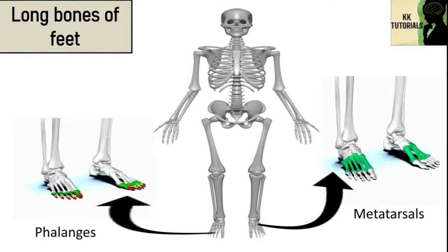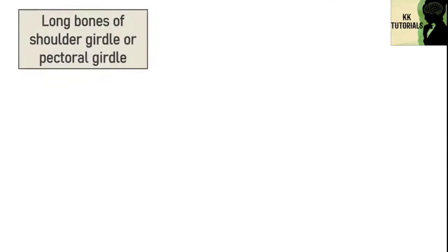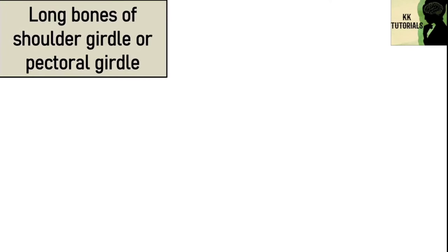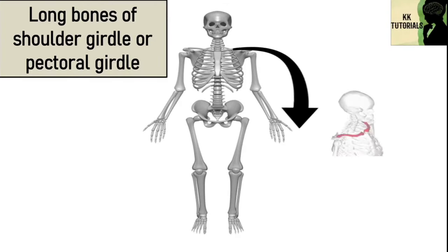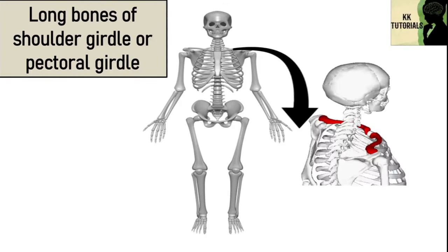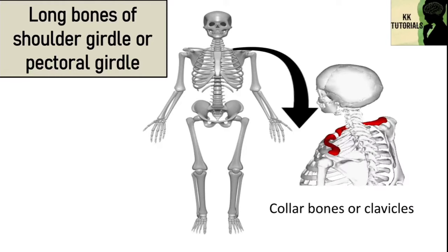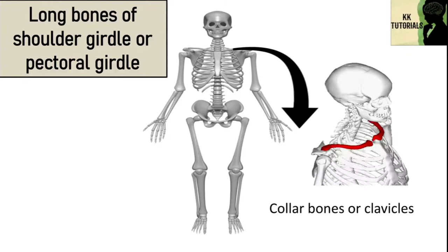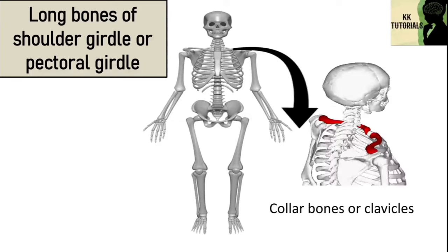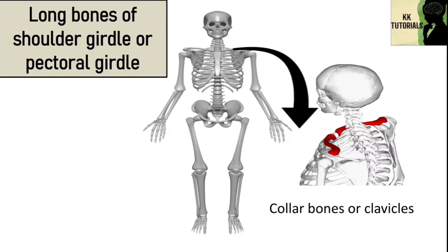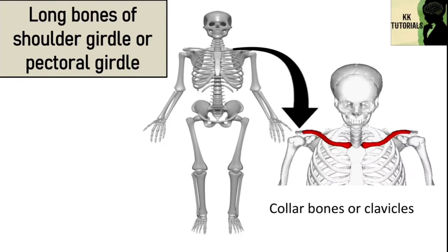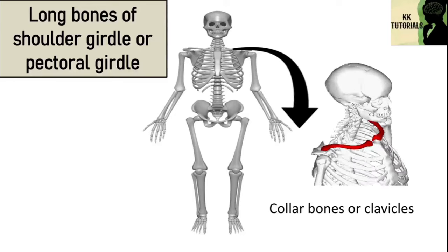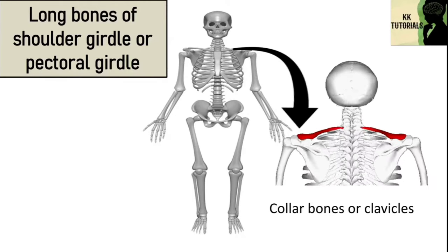Long bones of the pectoral girdle or shoulder girdle include the clavicles, which are also called collar bones. It is a slender S-shaped bone, approximately 6 inches long. The clavicle is the only long bone in the body that lies horizontally.